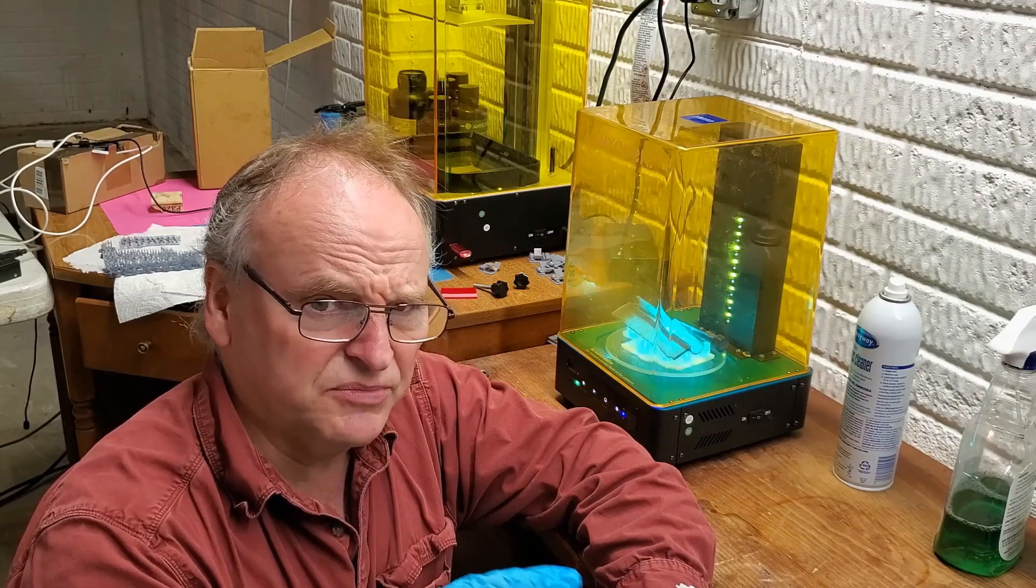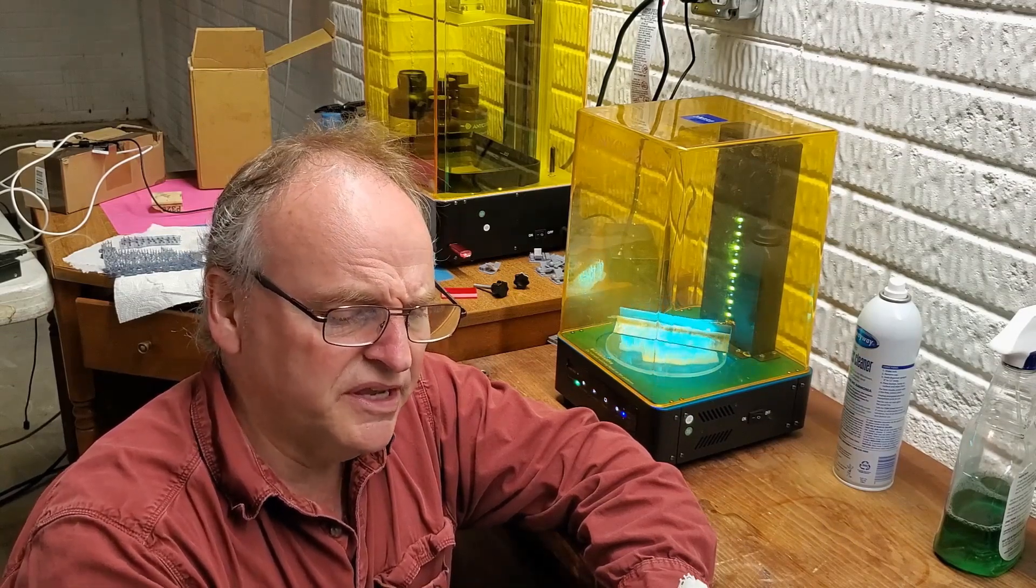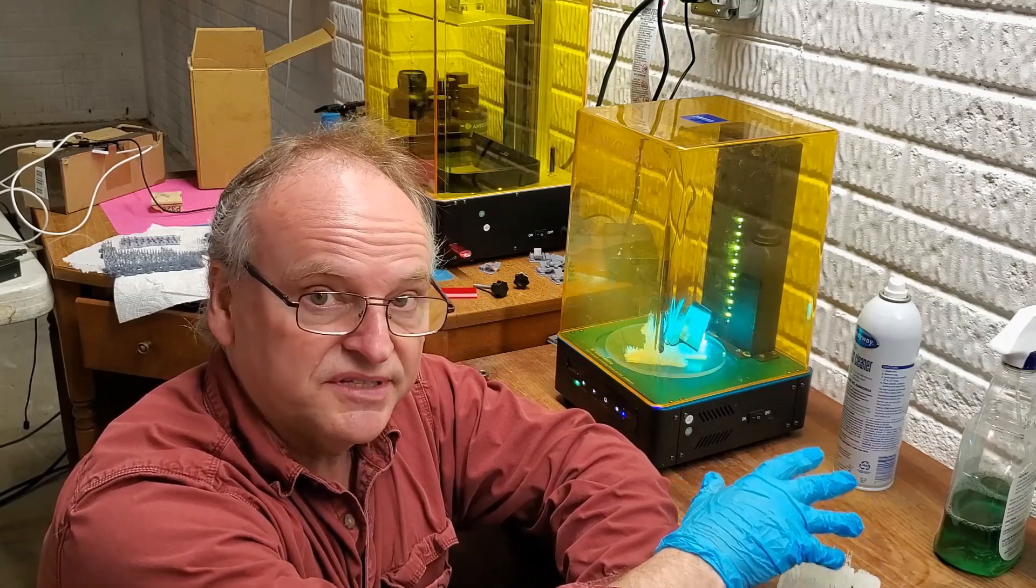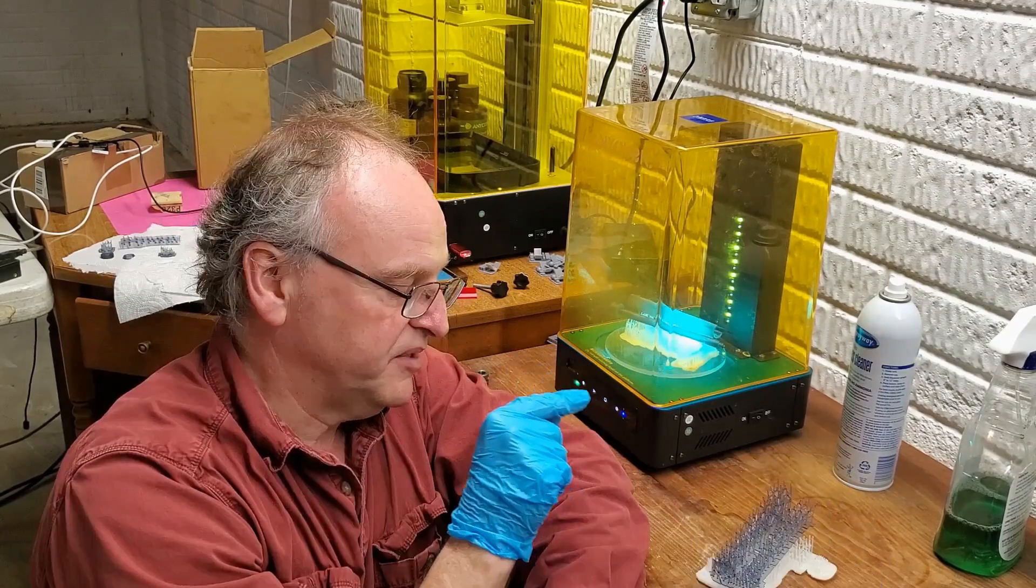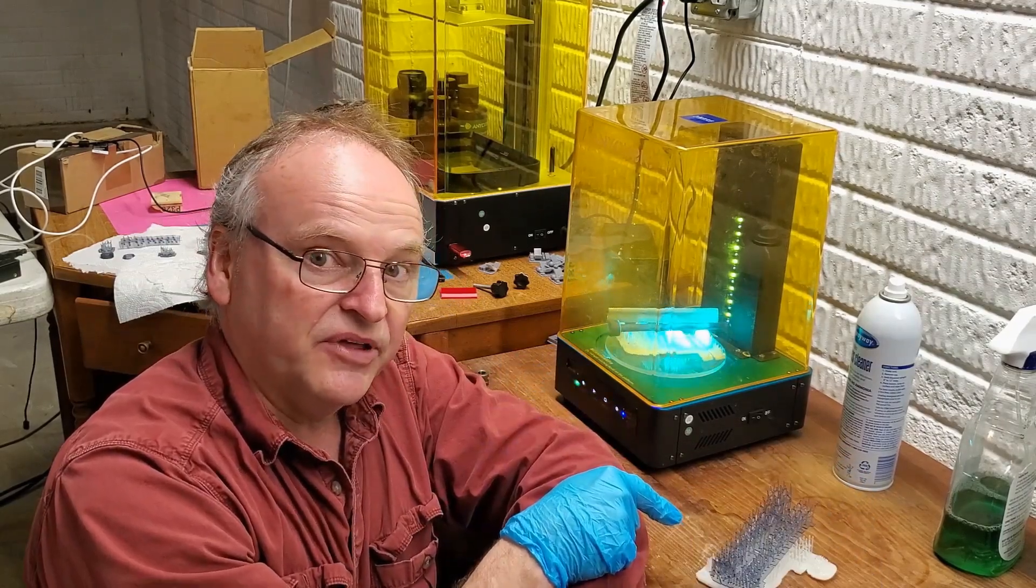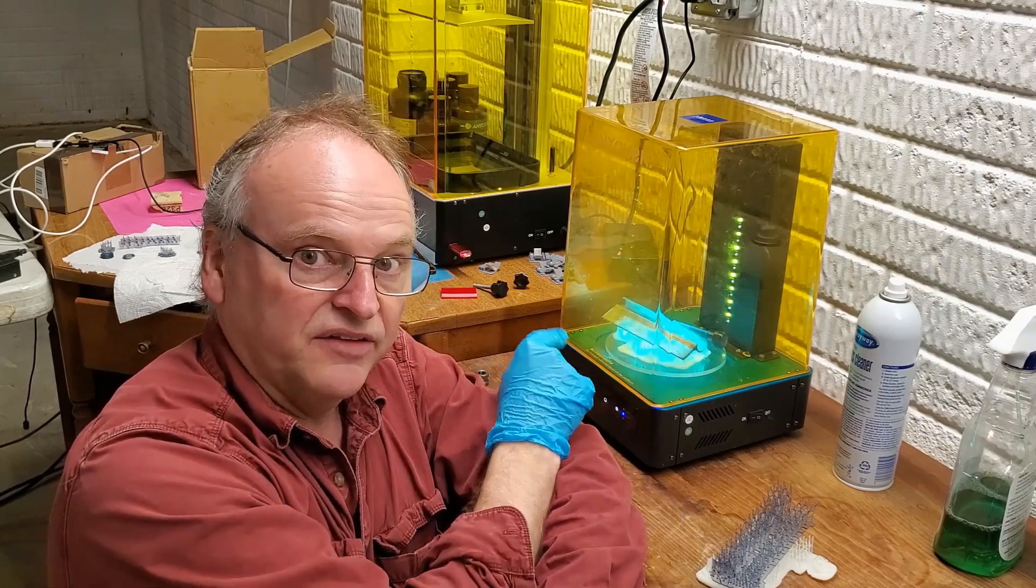Because sometimes you cure with the supports on to keep your parts from warping, you can still set it on this with your supports to keep it from sticking to the plate because it's easier to break that away from the hardened supports below it than it is to break it off the turntable.